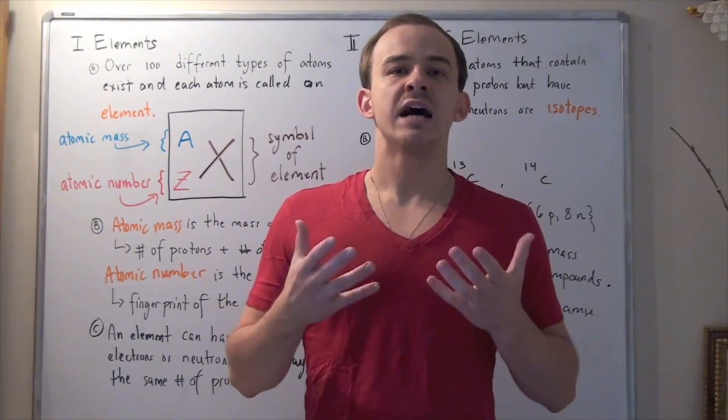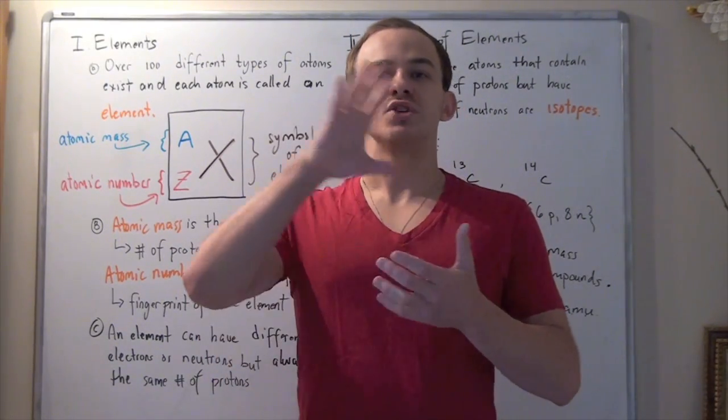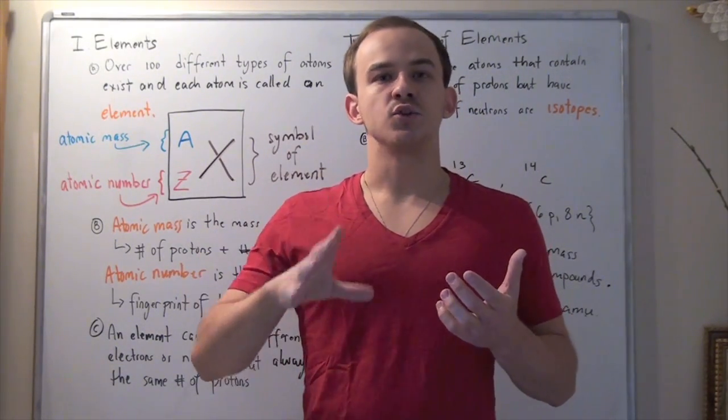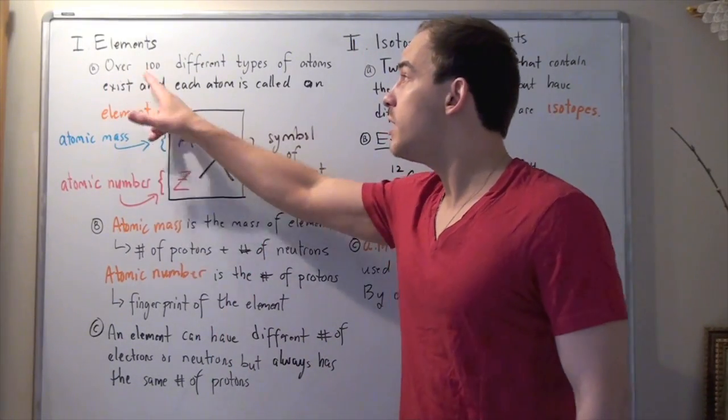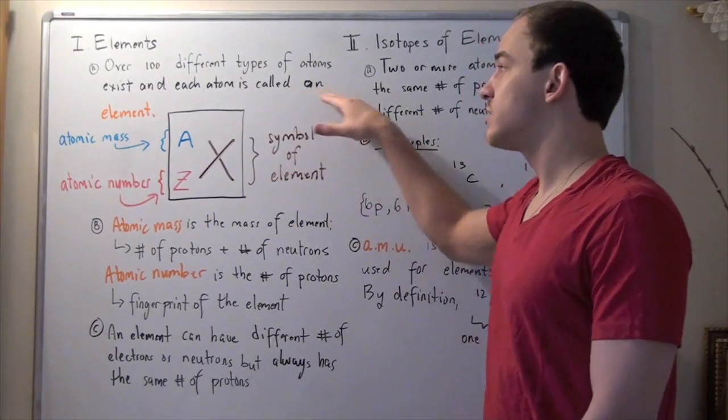There are many different types of atoms that exist and something called a periodic table represents all these atoms in a certain way. Over 100 different types of atoms exist and each atom is called an element.